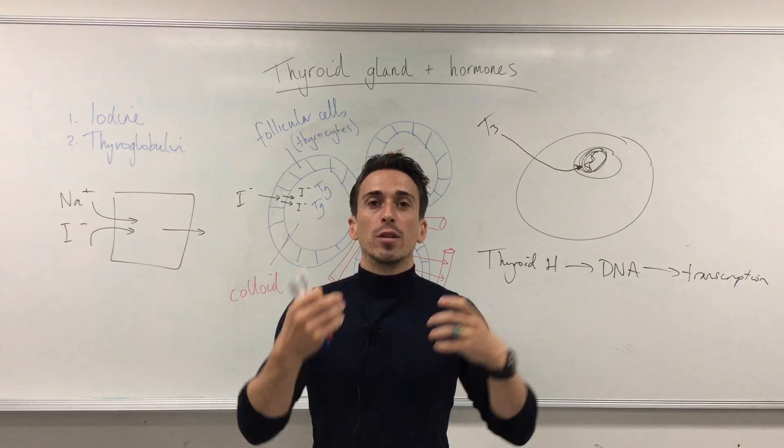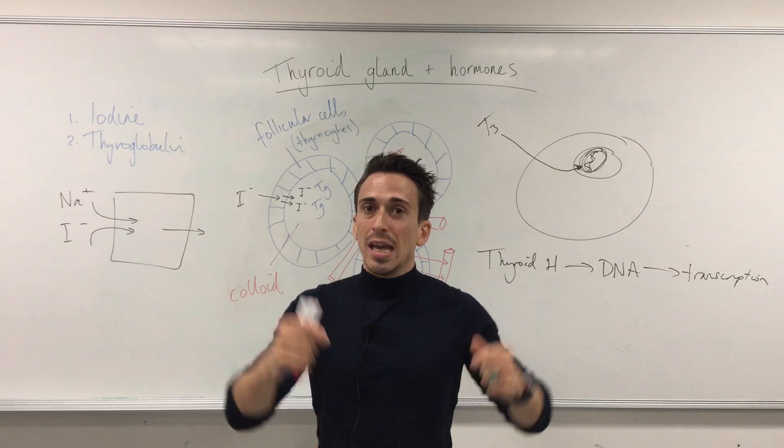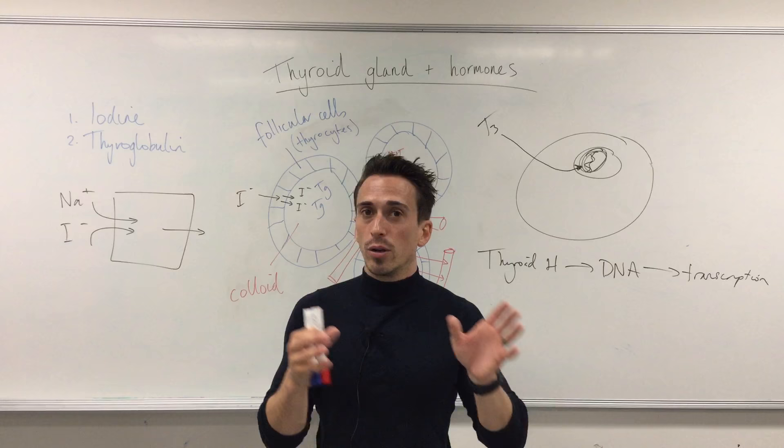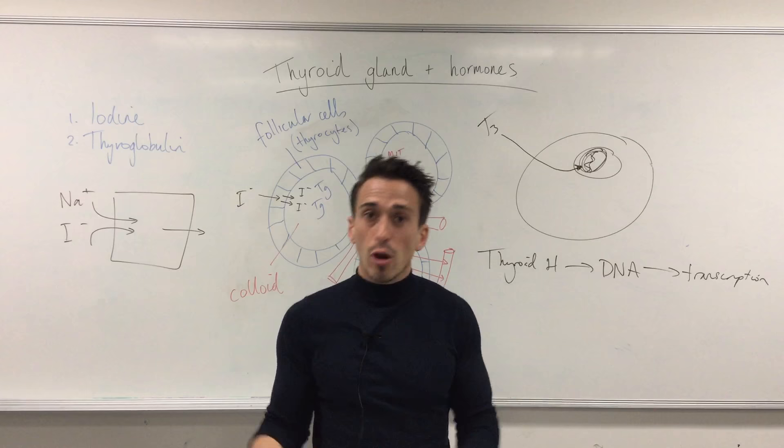Thyroid hormone is so important for the developing fetus that if a mother does not have enough iodine, she won't produce enough thyroid hormone and the child will have developmental issues. For the fetus, thyroid hormone is required for appropriate nervous system development. Without it, the fetus does not develop an adequate nervous system, which can result in mental retardation — a condition known as cretinism.